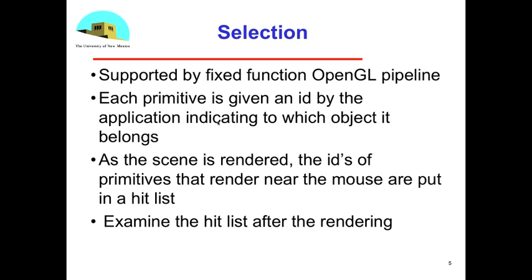Then as I render, the idea is that there will be a method of pointing to a place on the screen with the mouse, and then getting the IDs of those primitives that are near where the mouse is, and put them into something that's called a hit list. So every time I'm pointing at something, I'm hitting it.